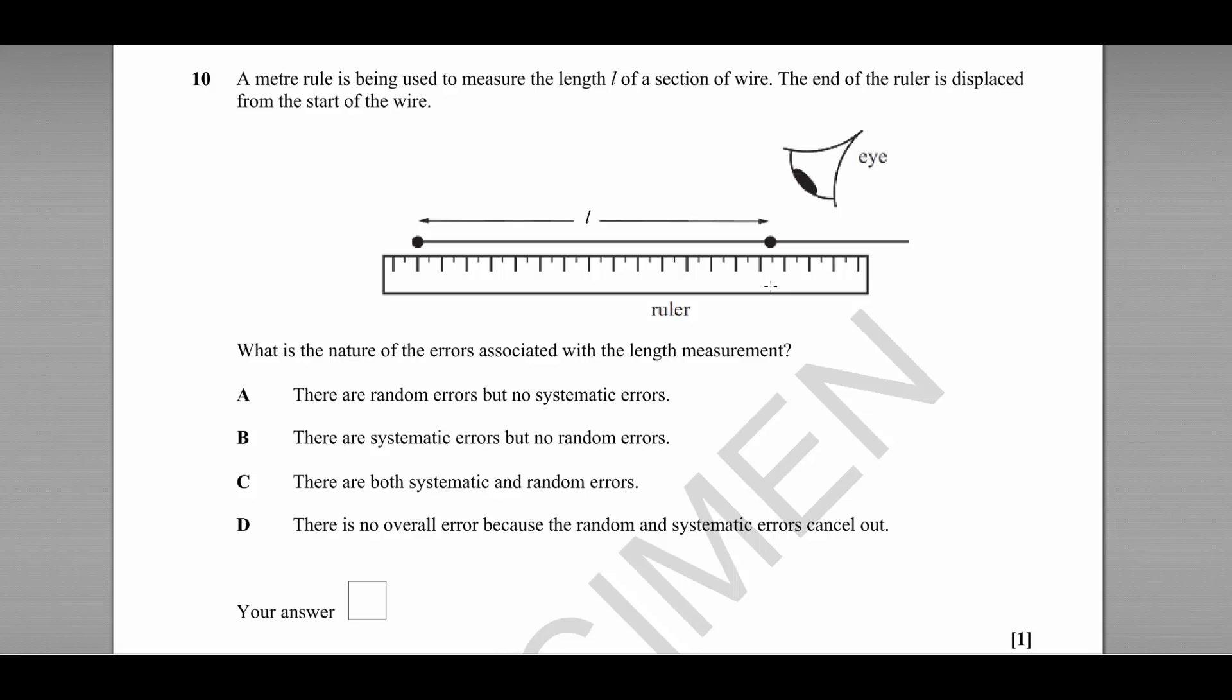If we took enough measurements and averaged them we could reduce the effect of any random uncertainty there, but there is certainly a random error present.